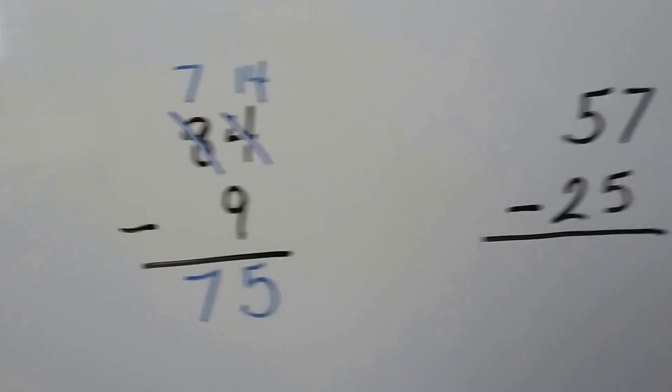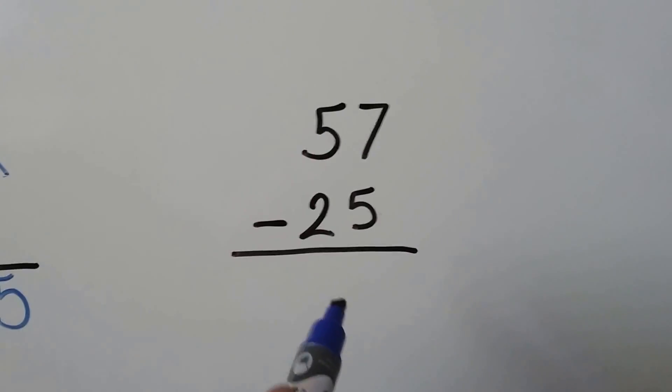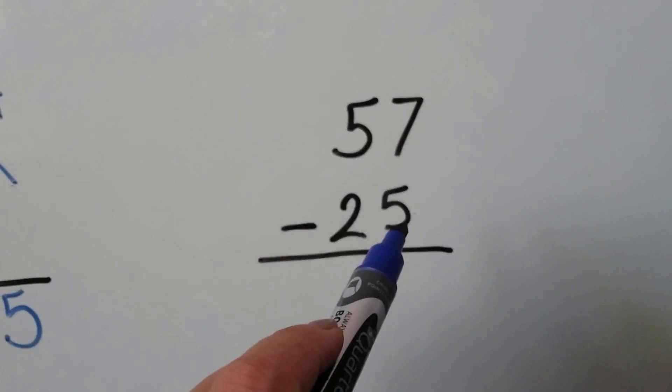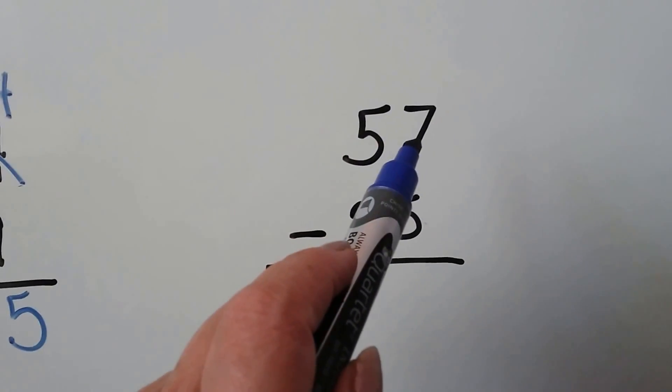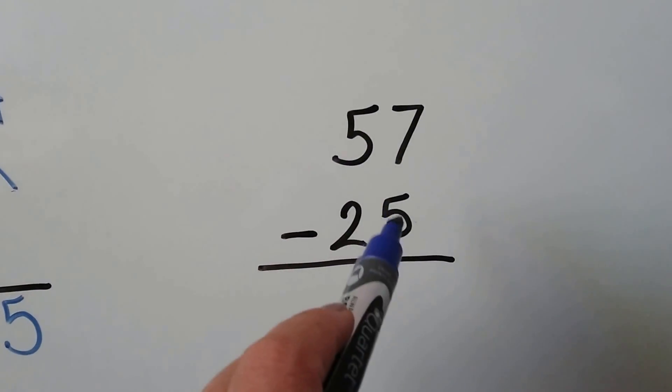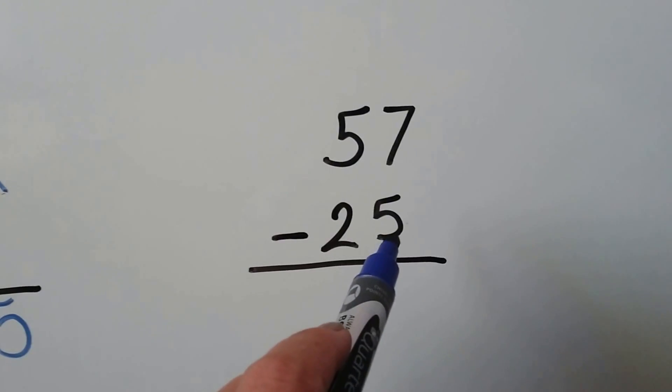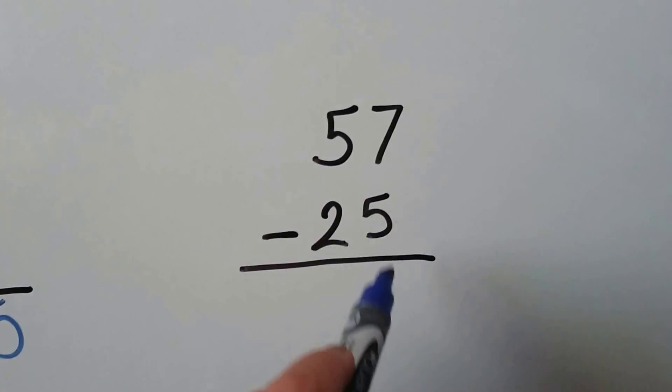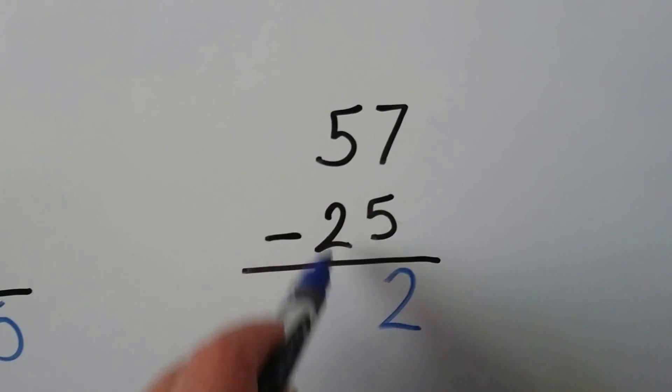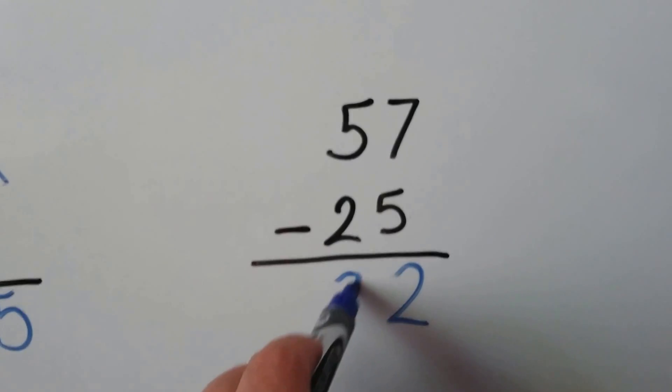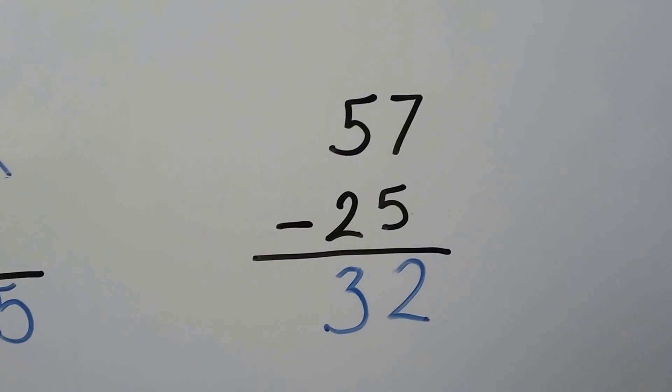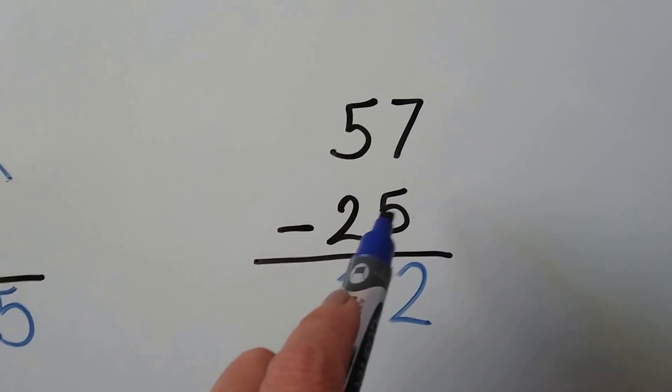Let's try it one more time. We look at the ones place. We see we have a 5. And there's a 7 in the minuend. Well, the 5 is smaller, so we don't need to regroup. 7 minus 5 is a 2. And 5 minus 2 is a 3. We get a 32. And we didn't need to regroup because the 5 was smaller.